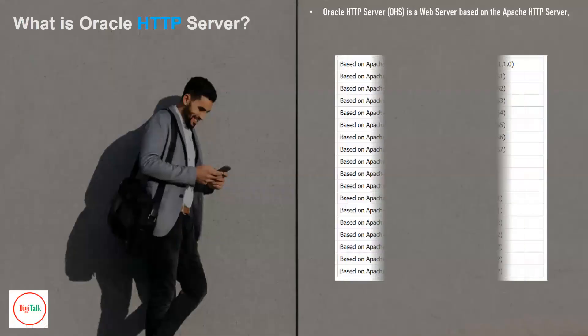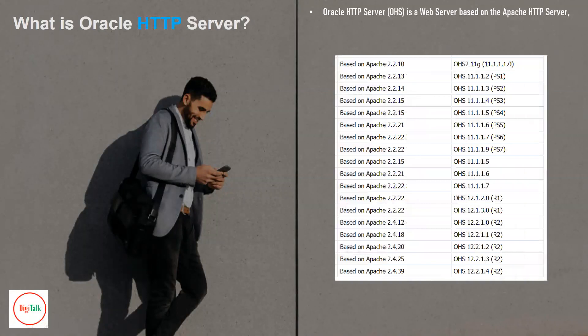So what is an Oracle HTTP Server? Oracle HTTP Server, also called OHS, is a web server based on the Apache HTTP server. It is used to hold certain kinds of static files, like HTML files, and sometimes it is used for security purposes in front of your application server.